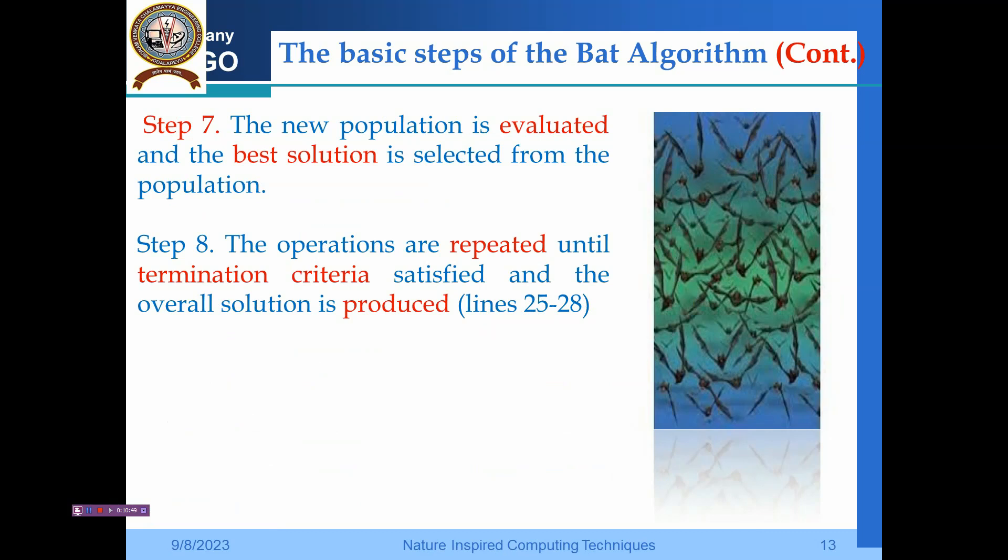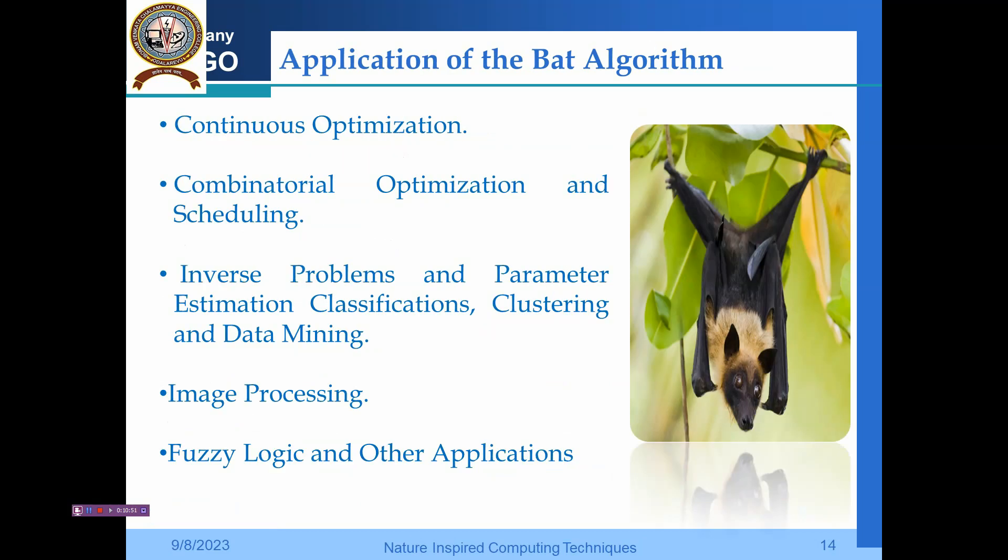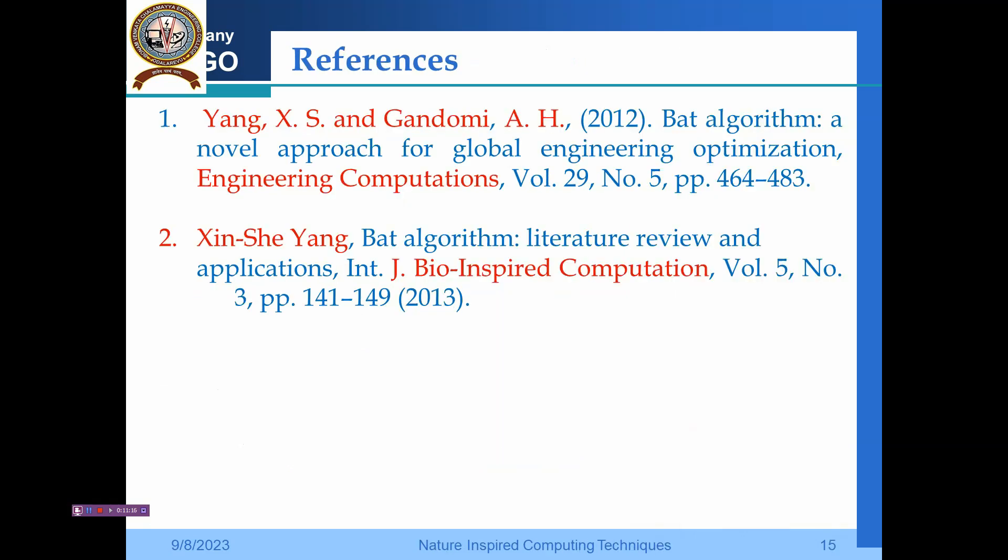We see some applications of this Bat Algorithm: continuous optimization, combinatorial optimization and scheduling, inverse problems and parameter estimation, classifications, clustering and data mining, image processing, and other applications like fuzzy logic.